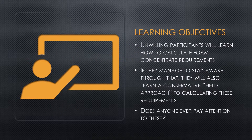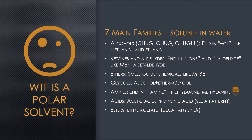We're going to talk about two different methods. One we're going to use if we're taking a test or if we're actually doing this on the back of a napkin or with a calculator. And then we're going to talk about another method that you can do in your head in the field to quickly figure out if you have enough foam to attack a flammable liquids fire — hydrocarbon or polar solvent.